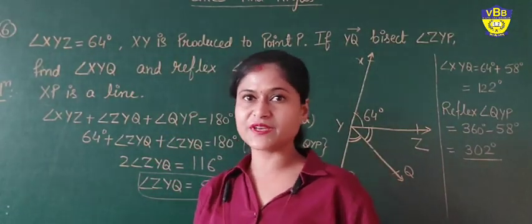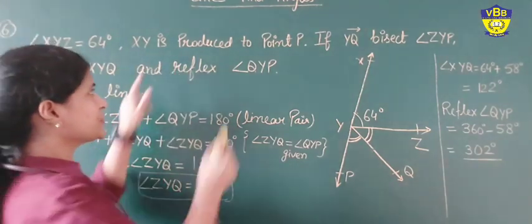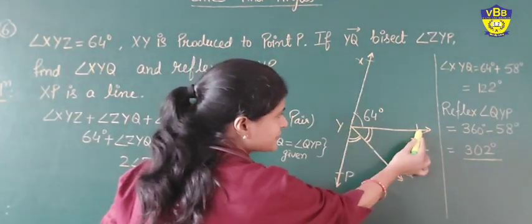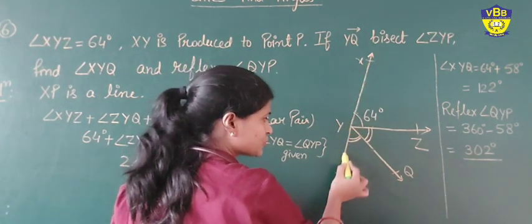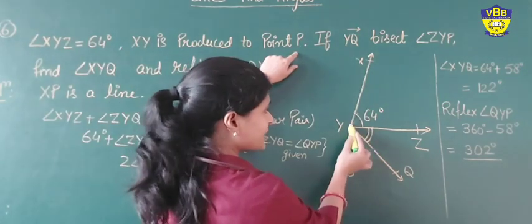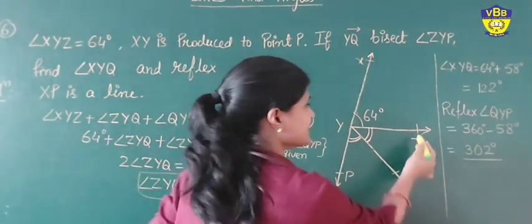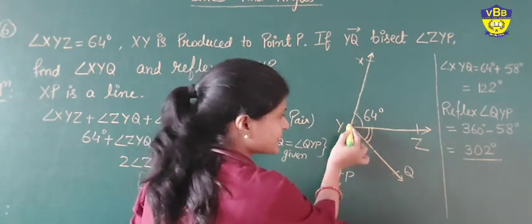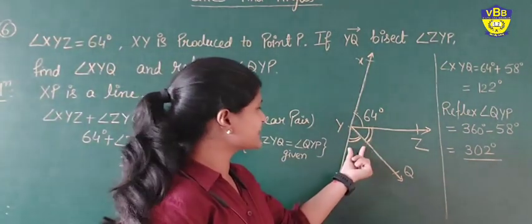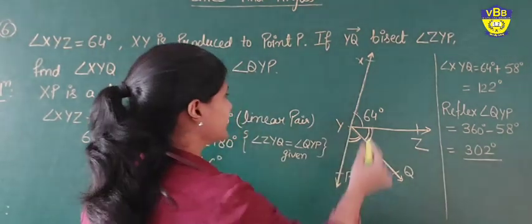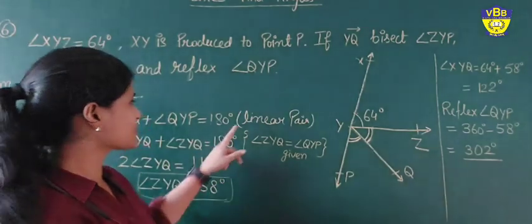The next question is also very important. Angle XYZ is equal to 64 degrees. Ray XY is produced to point P. Ray YQ bisects angle ZYP — bisect means it equally divides the angle, so this angle is equal to that angle. Since XP is a line, the sum of angle XYZ, angle ZYQ, and angle QYP is equal to 180 degrees because of the linear pair.